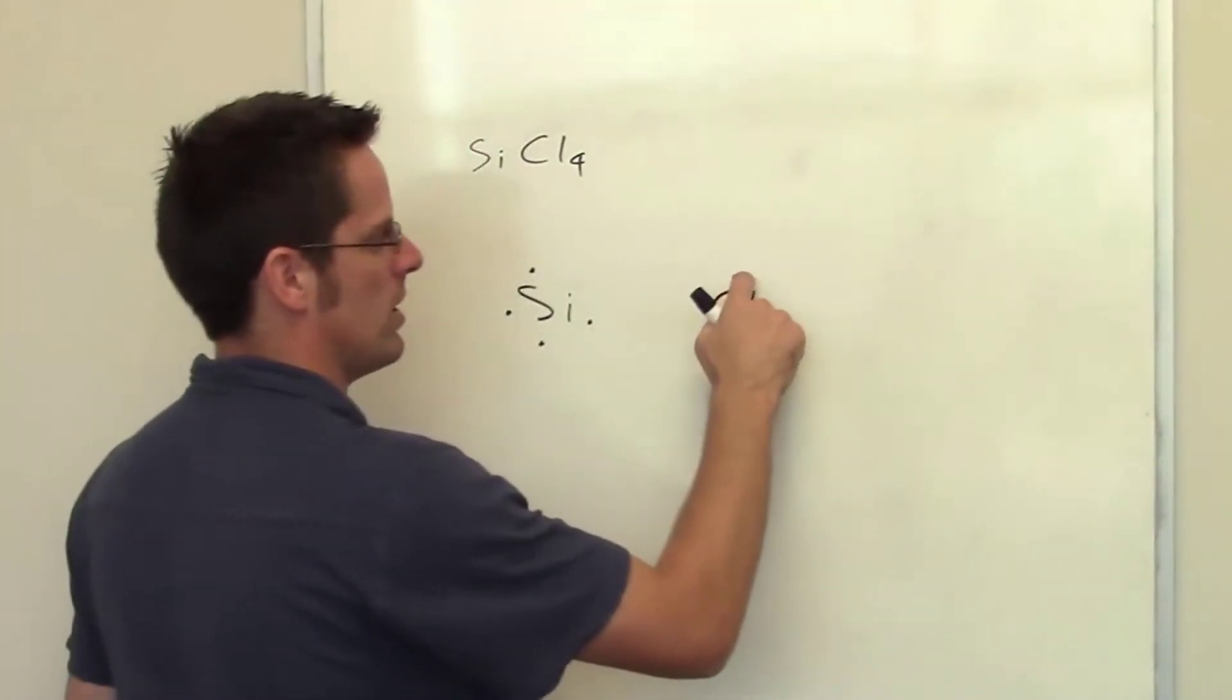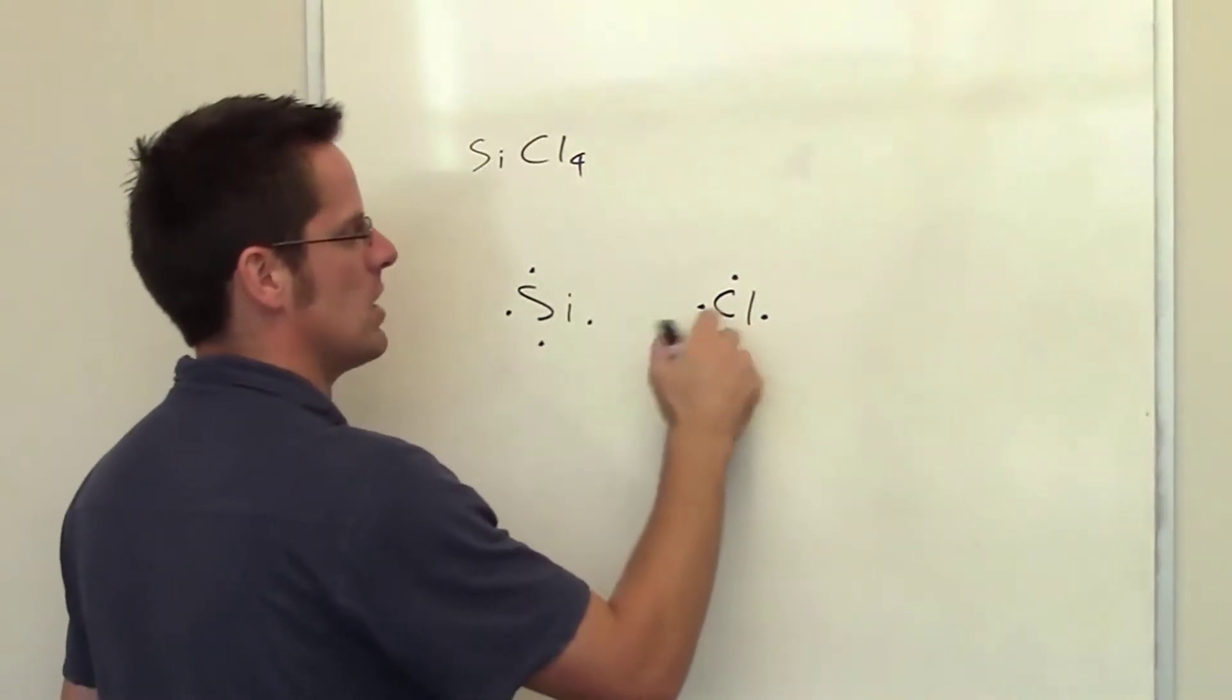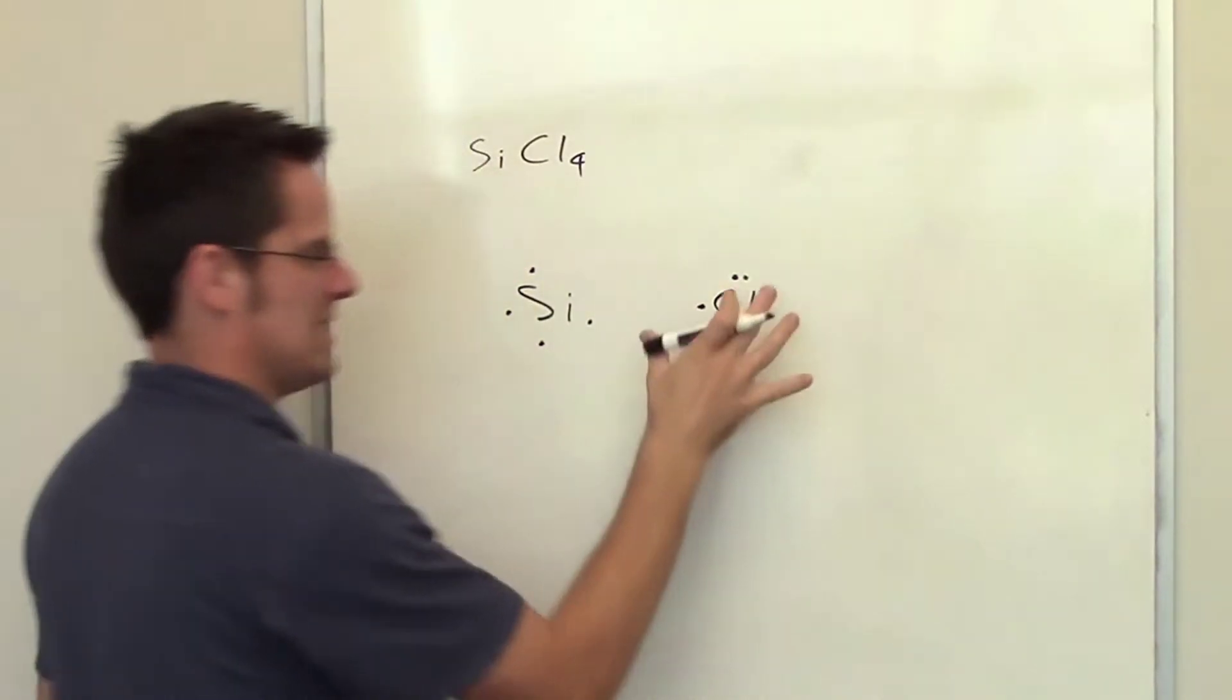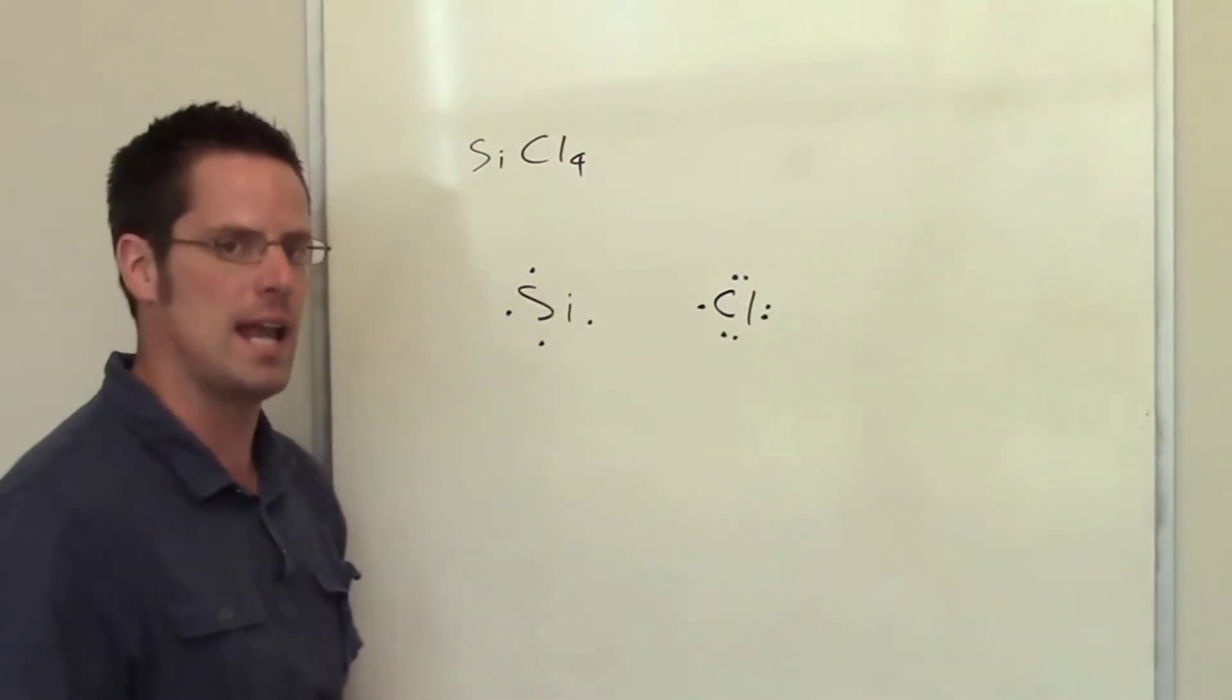So we'll go around the horn, top, one, then to the right, then down to the bottom, then over here, and then I start adding more and I pair them up. So that's seven valence electrons. I have four individual chlorine atoms.